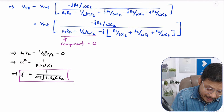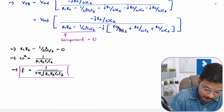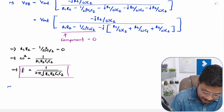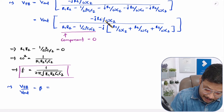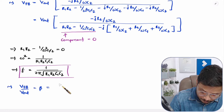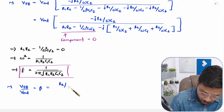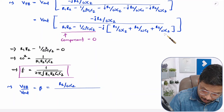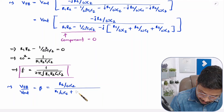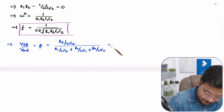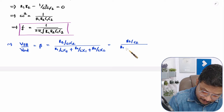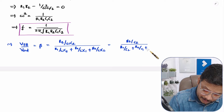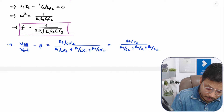Now for the feedback gain beta, which is VFB divided by Vout: the minus j cancels from numerator and denominator, giving beta equals R2 divided by C2, all divided by R1 divided by C2 plus R2 divided by C1 plus R2 divided by C2. The omega terms cancel out, confirming beta is a real quantity.